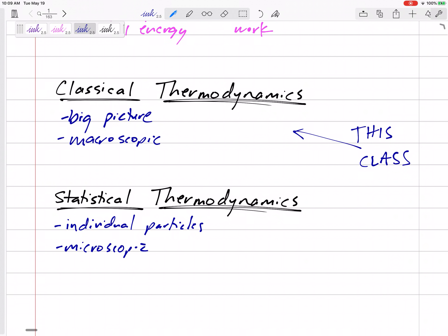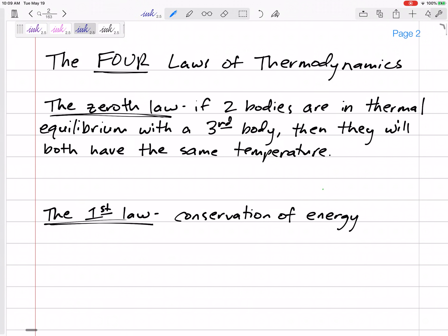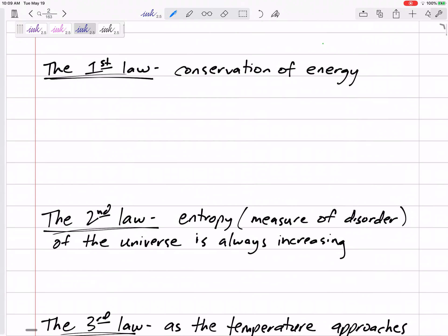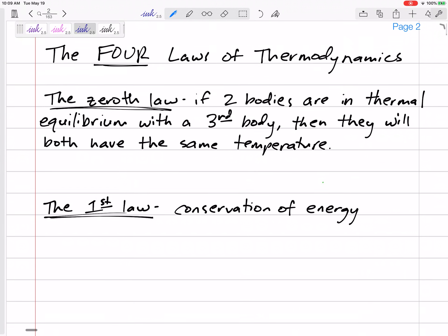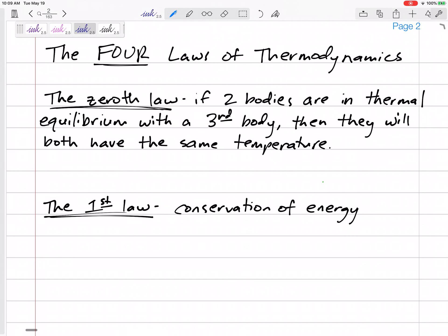Our class is based on these four laws of thermodynamics. We start with the zeroth law. Why we start with the zeroth law? Well, I think that they had laws one, two, and three, but then they decided before we get to laws one, two, and three, we need this law. We'll call it the zeroth law. That says if two bodies are in thermal equilibrium with a third body, then they will both have the same temperature.